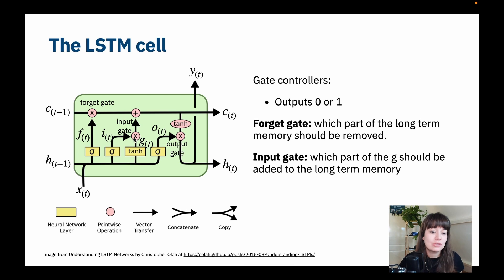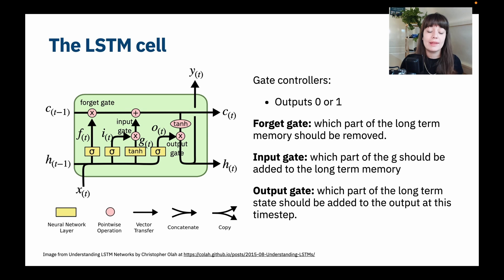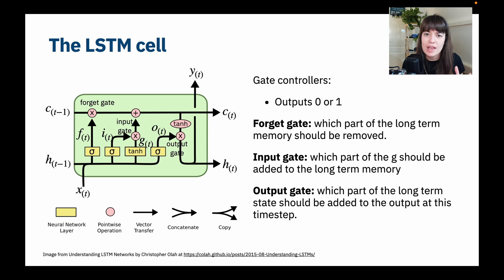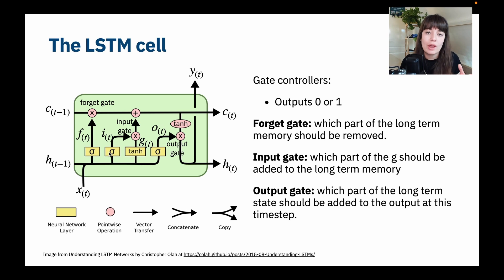The input gate determines what part of the new information we've just received should be added to the long-term memory — what should be useful in the future. The output gate tells us which part of the long-term memory should be extracted and used to generate the output and the hidden state of this time step. Generally, what you need to know is that there are gate controllers that decide if something is going to be forgotten, inputted, or outputted from the long-term memory, and there is the main tract of information flowing from input to output. Those are the main steps of an LSTM cell, and you don't need to go further than this to use one.